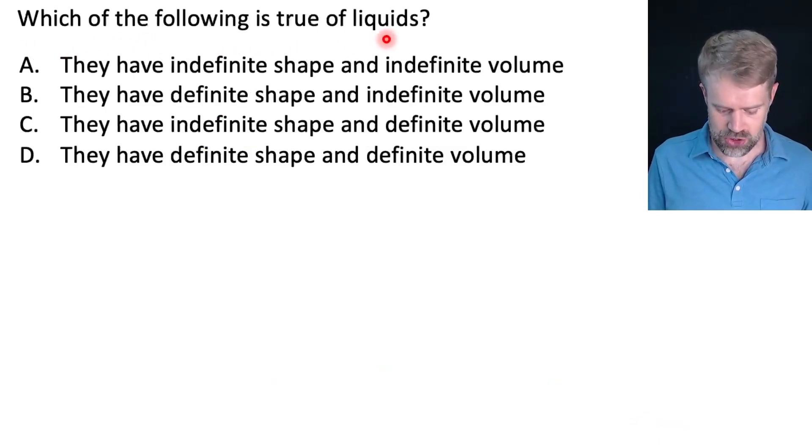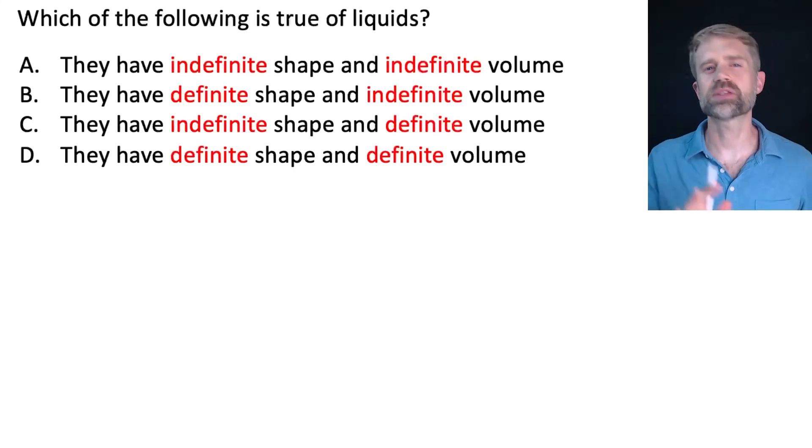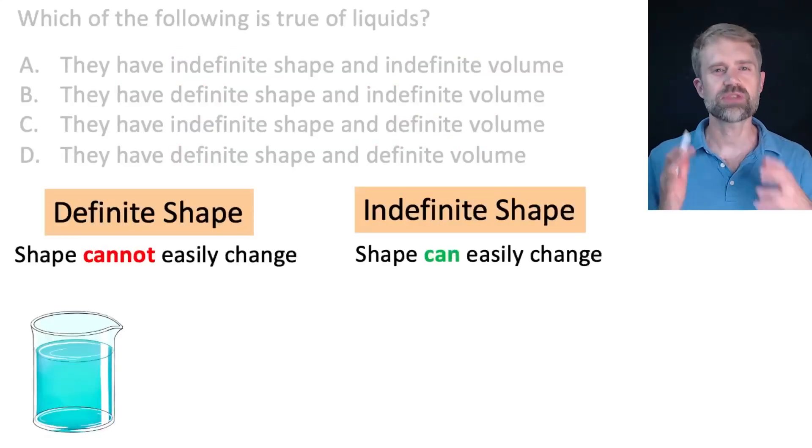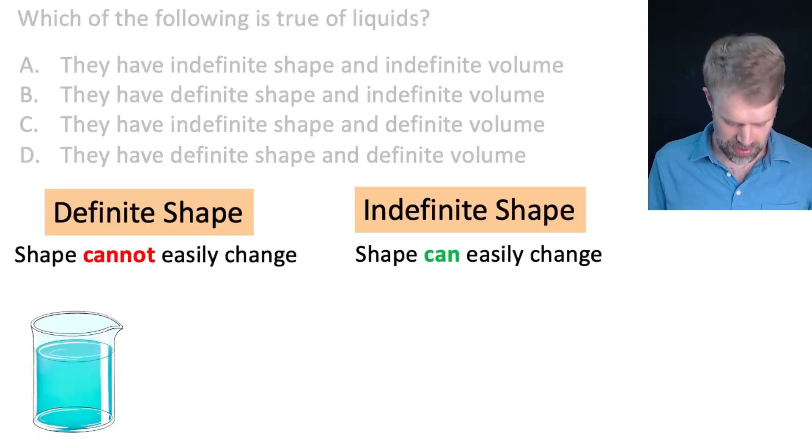Okay, which of the following is true of liquids? Let's start here. If you look over the answer choices, you'll see that we're talking about shape and volume. And we need to know whether they are definite or indefinite. So what does all this mean? Let's start with shape. If something has a definite shape, that means that the shape cannot easily change. On the other hand, an indefinite shape means that the shape of something can easily change.